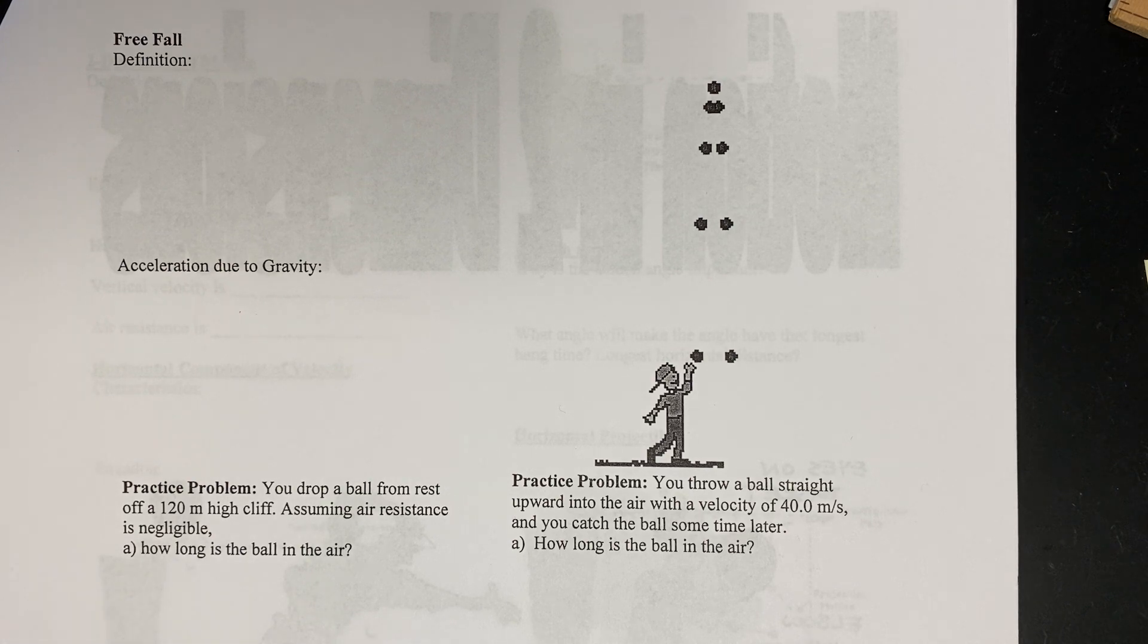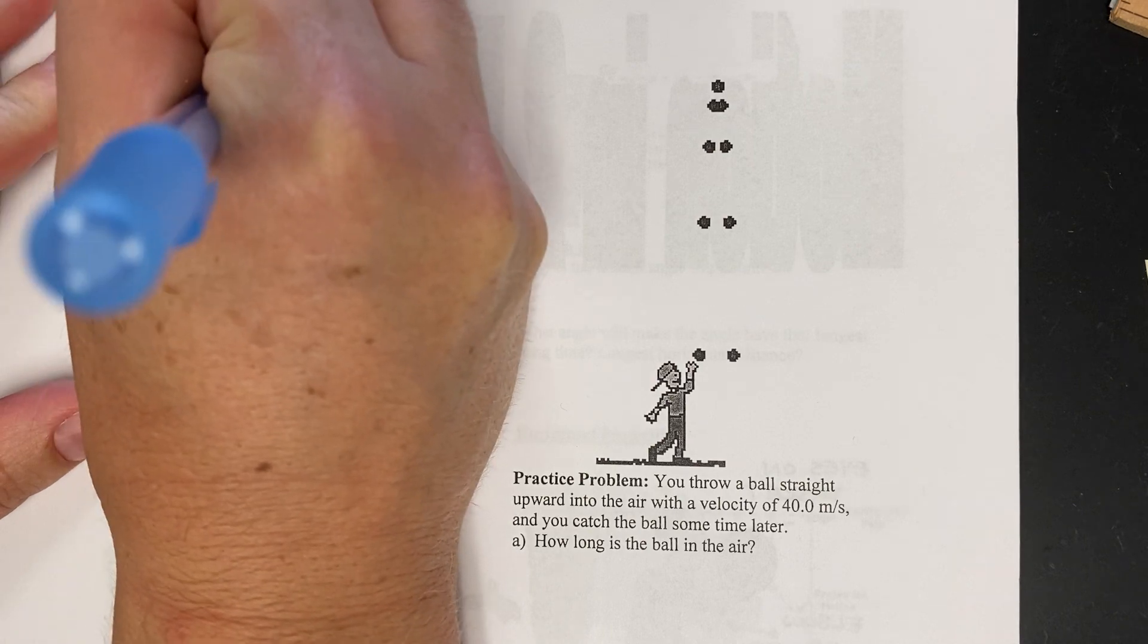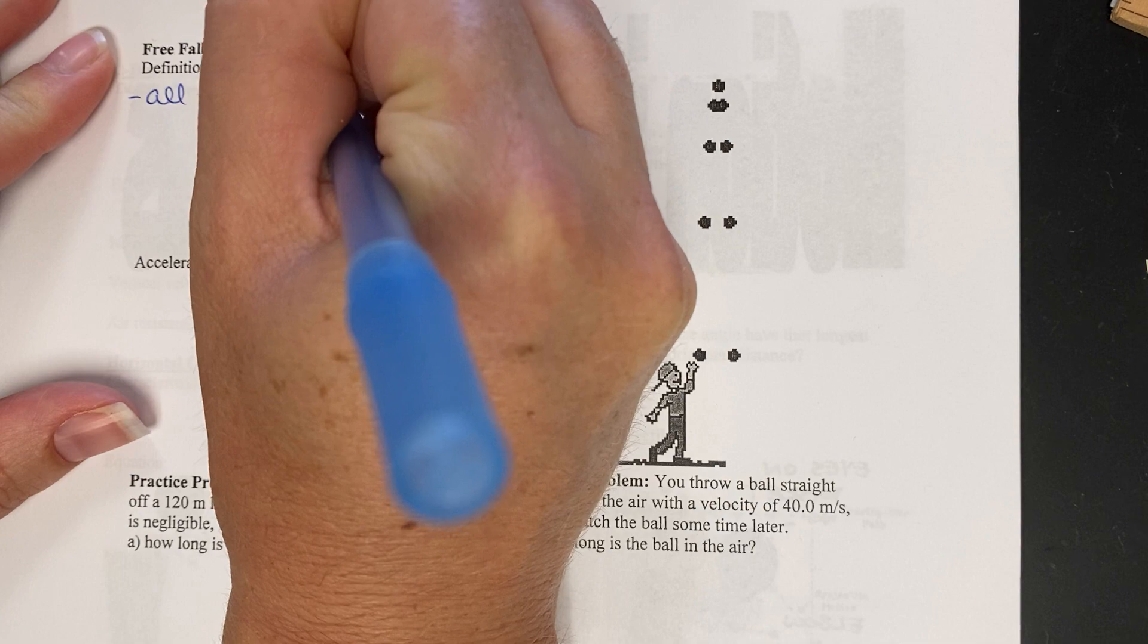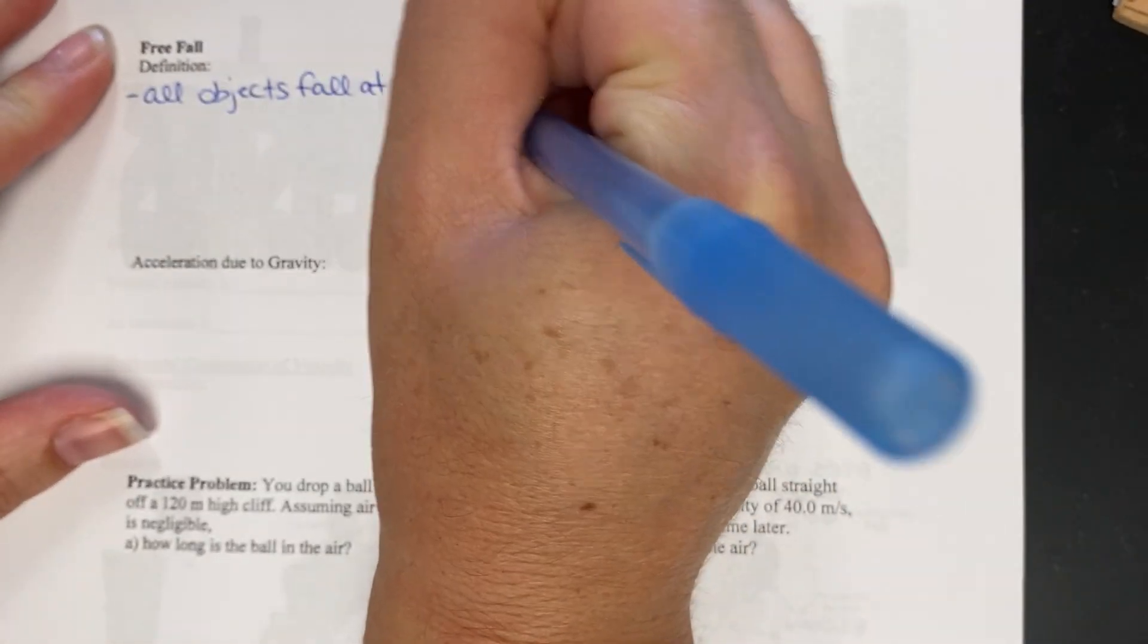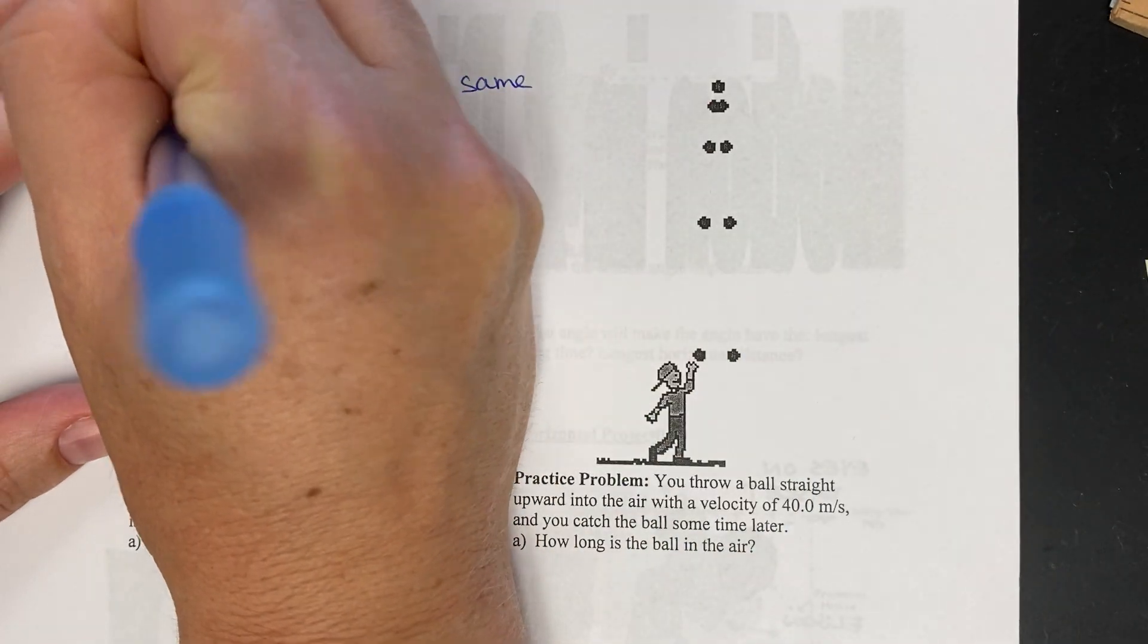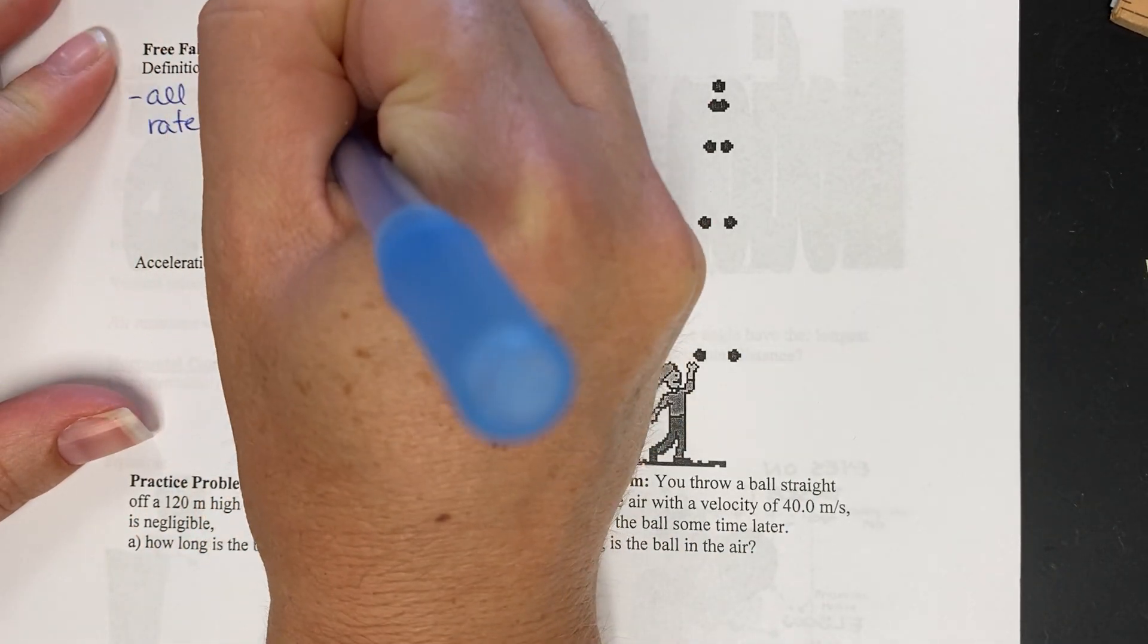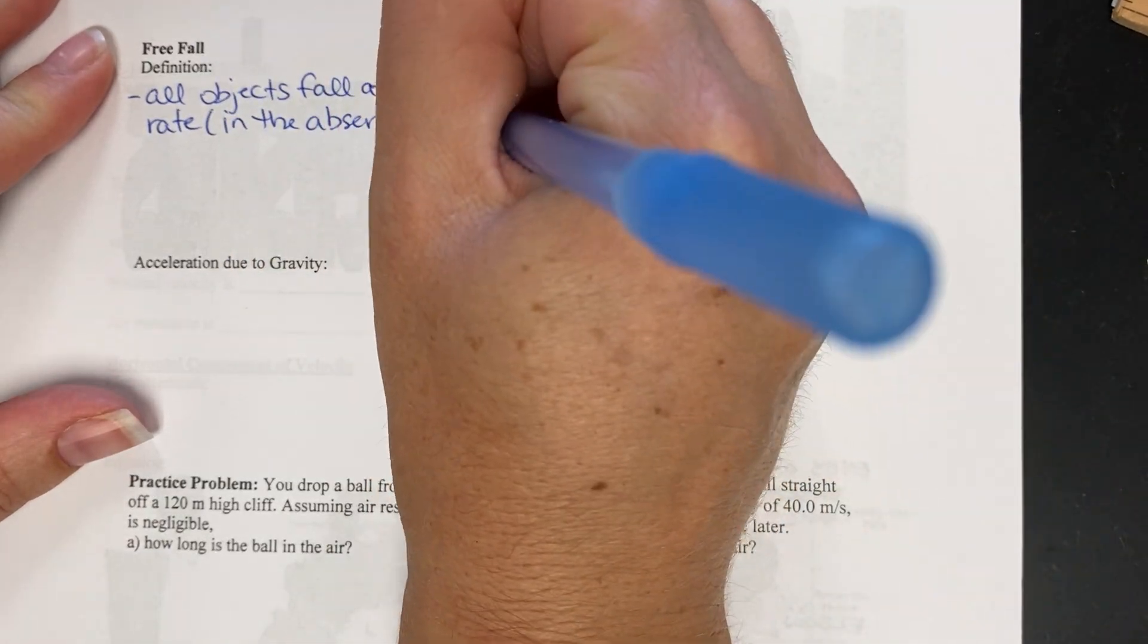You just watched a little Brian Green and a little bit of me dropping a book and a piece of paper and we said that all objects fall at the same rate in the absence of air resistance.